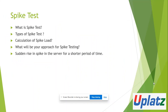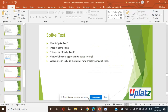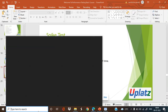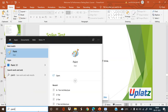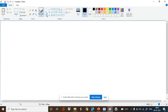So what is spike test? Spike test is also a non-functional test where we identify a sudden rise in spike. Let me show you an example — I want to show you what a spike looks like compared to stress, so let's look at this graph.